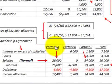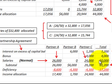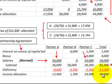We have Partner A, Partner B, and Partner C. Under the partnership agreement, interest on excess capital was budgeted at $7,200, a bonus of $4,400 was allocated, and normal salary allocation was $50,000 — for a total normal allocation of $61,200. However, for the year, the partnership only earned $44,000, so the allocated amount of $61,200 is deficient by $17,200.